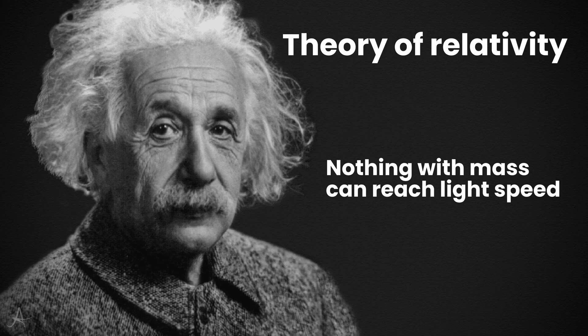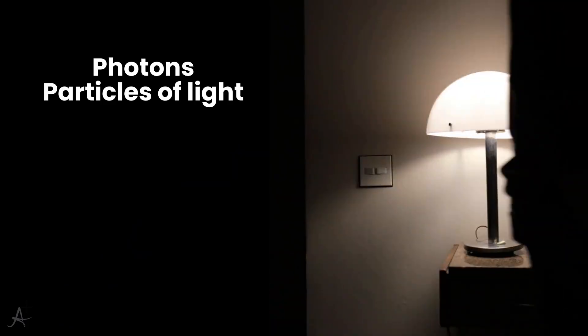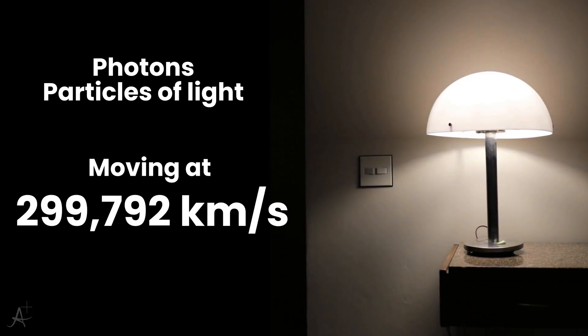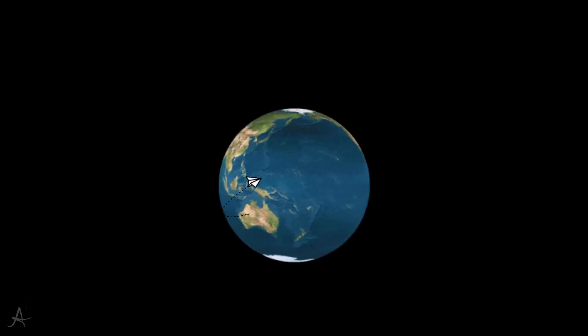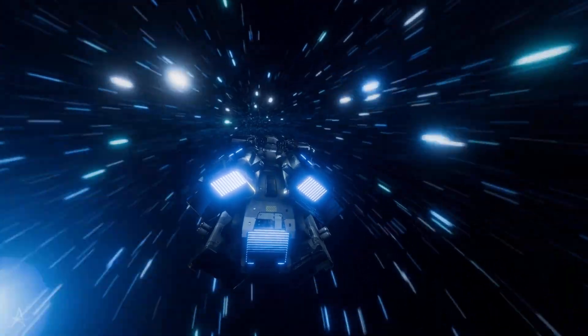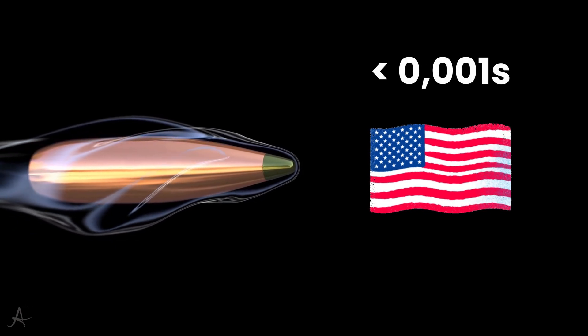But what if that rule could be bent or even broken? What if someday humanity could go faster than light? Let's start with what light speed actually means. When you flip a switch, photons, particles of light, shoot out at about 299,792 kilometers per second. That's about seven and a half times around the Earth in a single second. Nothing else we know of can move that fast. If you fired a bullet at that speed, it would cross the entire United States in less than a thousandth of a second.